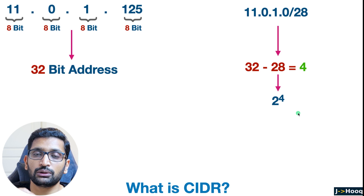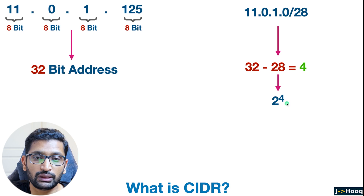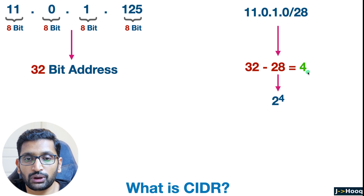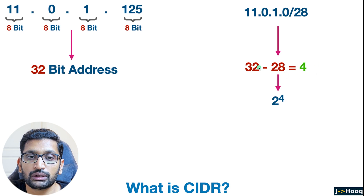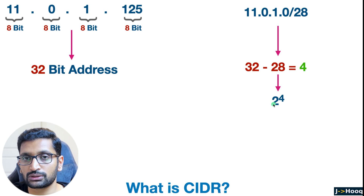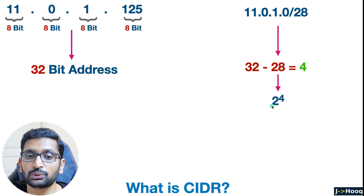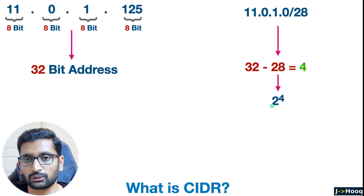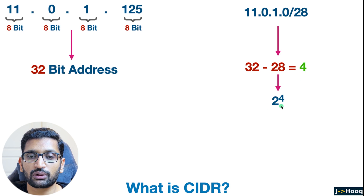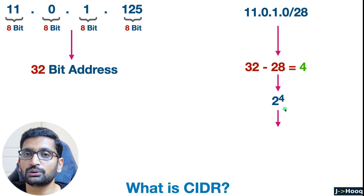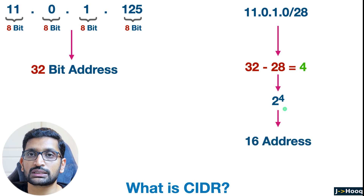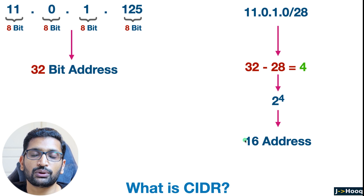Once you get the answer after subtracting from 32, you calculate 2 raised to that power. So here, 2 raised to the power 4. If the CIDR were /16, you'd get 32 minus 16 equals 16, then 2 to the power 16. Keeping this example simple: 2 raised to the power 4 gives 16 addresses. So with this /28 CIDR notation, you will get 16 addresses for your network.